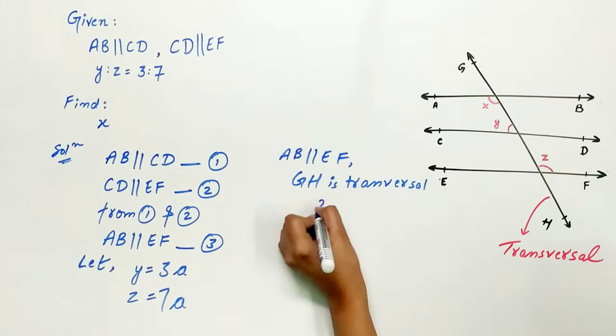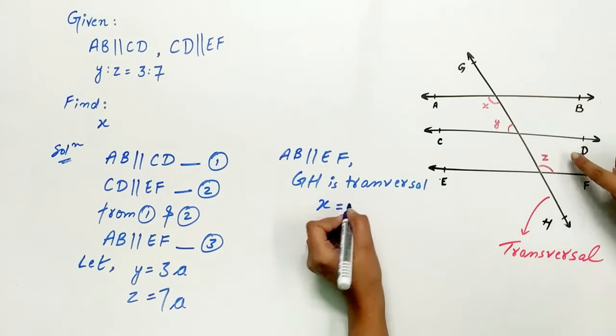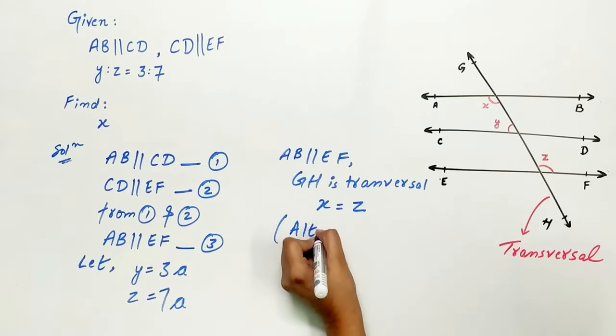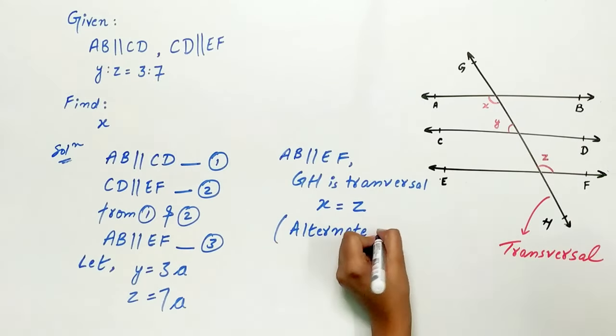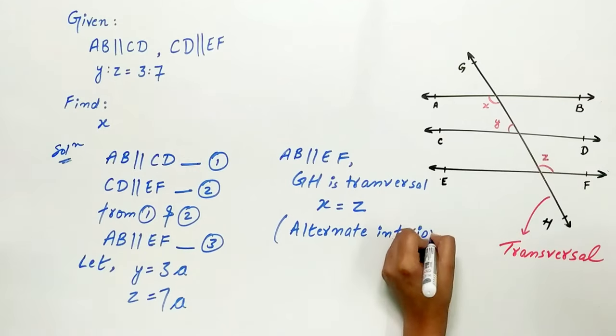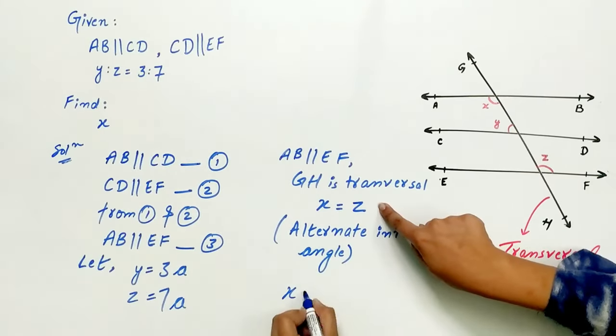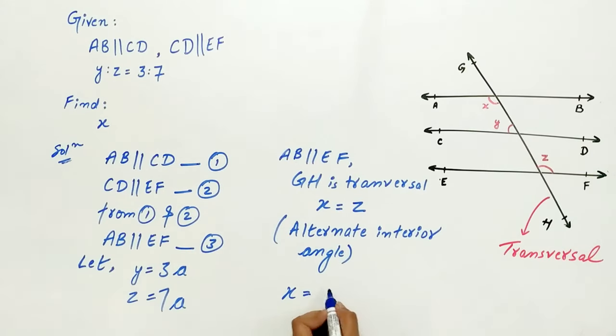So, X is equal to Z because of alternate interior angles. Hence, X is equal to 7A.